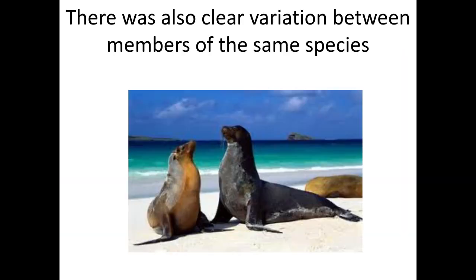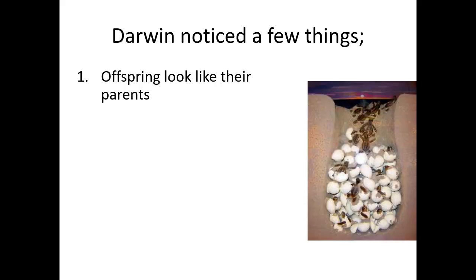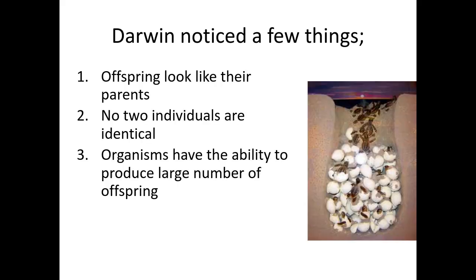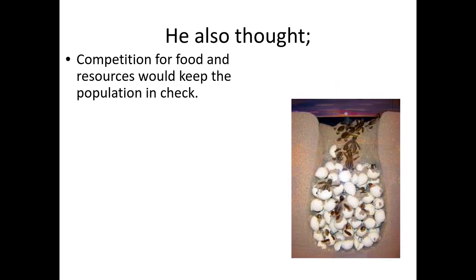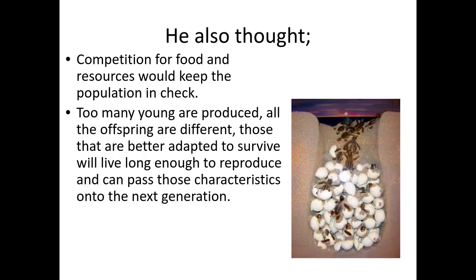He also saw that there was clear variation between members of the same species. He noticed that offspring look like their parents, no two individuals are identical, and organisms have the ability to produce a large number of offspring. Yet populations tend to remain fairly stable, meaning some offspring must die off, and there must be competition for food and resources.